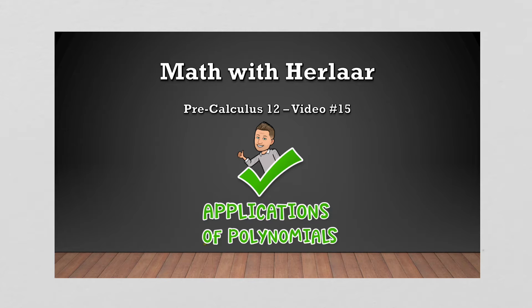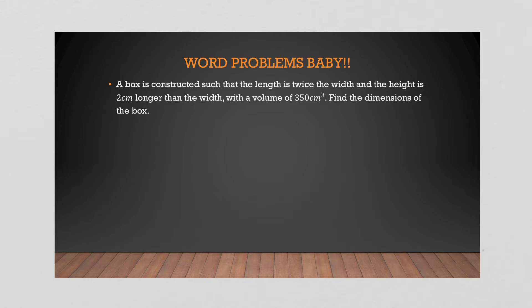Here we go. A box is constructed such that the length is twice the width and the height is two centimeters longer than the width. So let's think about what this box looks like. It's 3D. Everything is given with respect to the width: the width is the width, the length is two times the width, and the height is two centimeters more than the width.